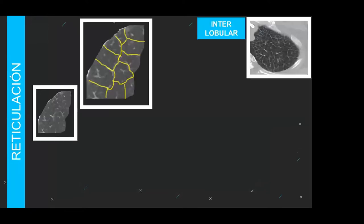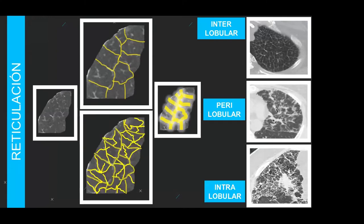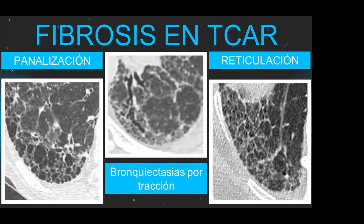Otro signo fibrótico es la reticulación, que puede ser de diferentes maneras y también nos ayudará a pensar en un patrón tomográfico u otro. Uno de ellos es el interlobulillar, otro es el perilobulillar — un patrón más tosco — que nos lleva a pensar en neumonía en organización. También existe el patrón en red de tipo intralobulillar. En fibrosis en TACAR, vemos panelización, bronquiectasia y/o reticulación.